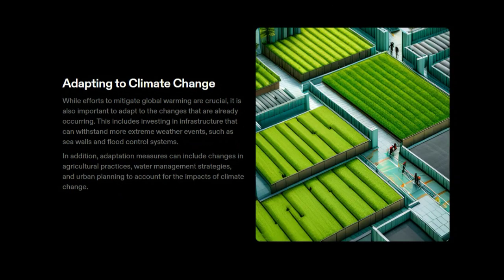Adapting to climate change: While efforts to mitigate global warming are crucial, it is also important to adapt to the changes that are already occurring. This includes investing in infrastructure that can withstand more extreme weather events, such as sea walls and flood control systems. Adaptation measures can also include changes in agricultural practices, water management strategies, and urban planning to account for the impacts of climate change.